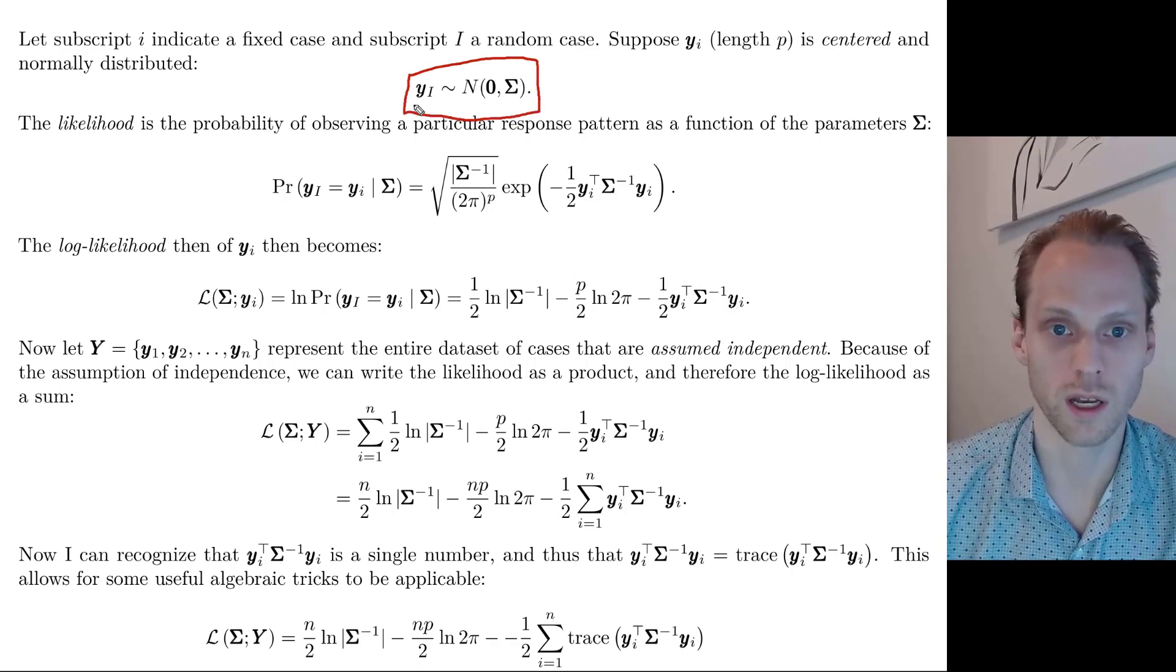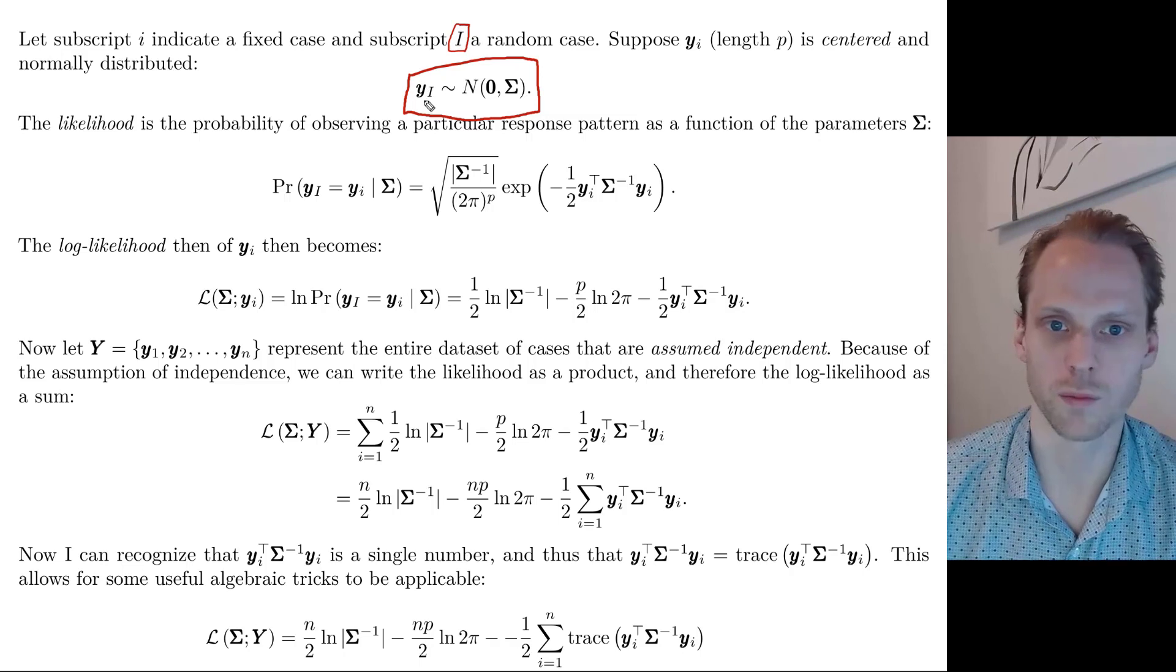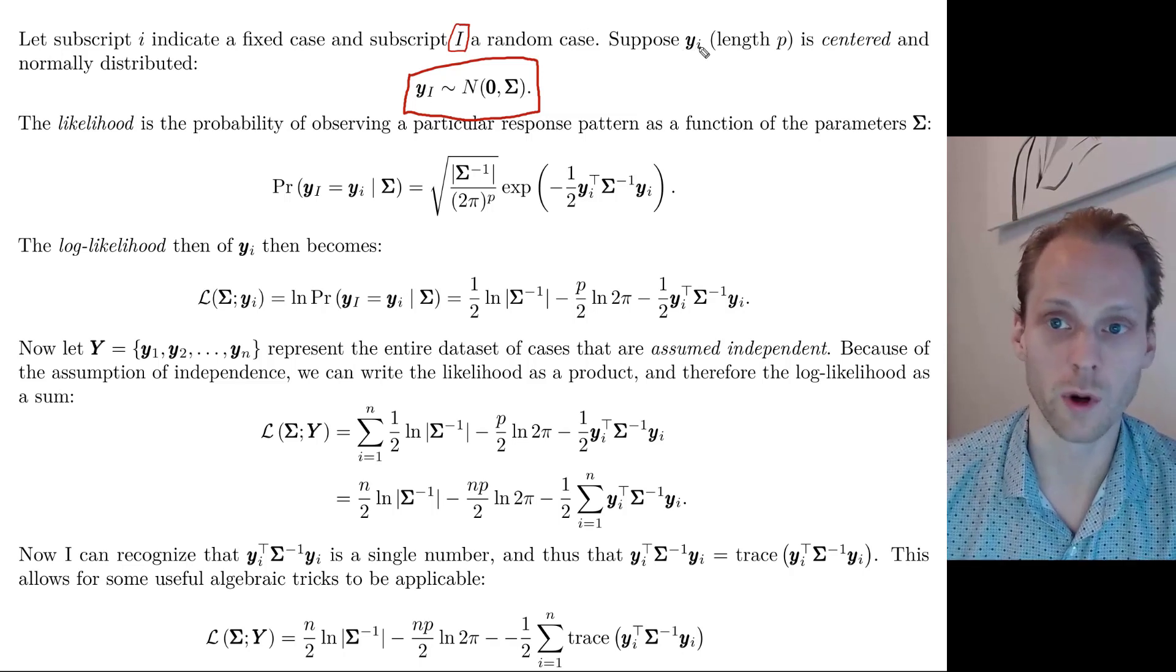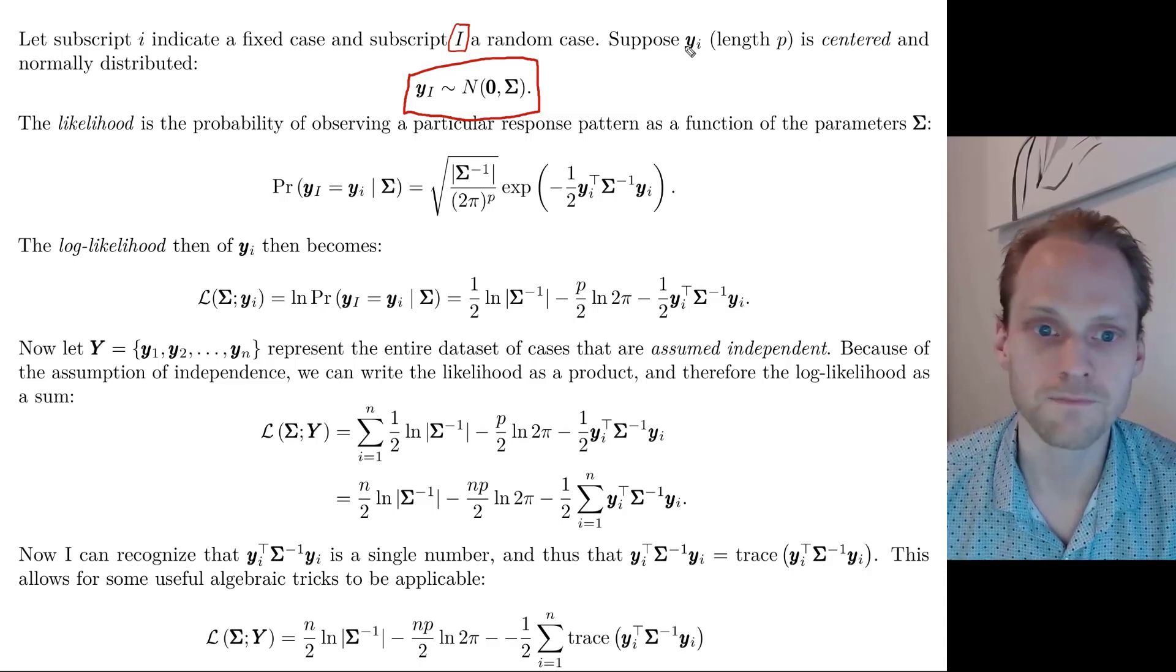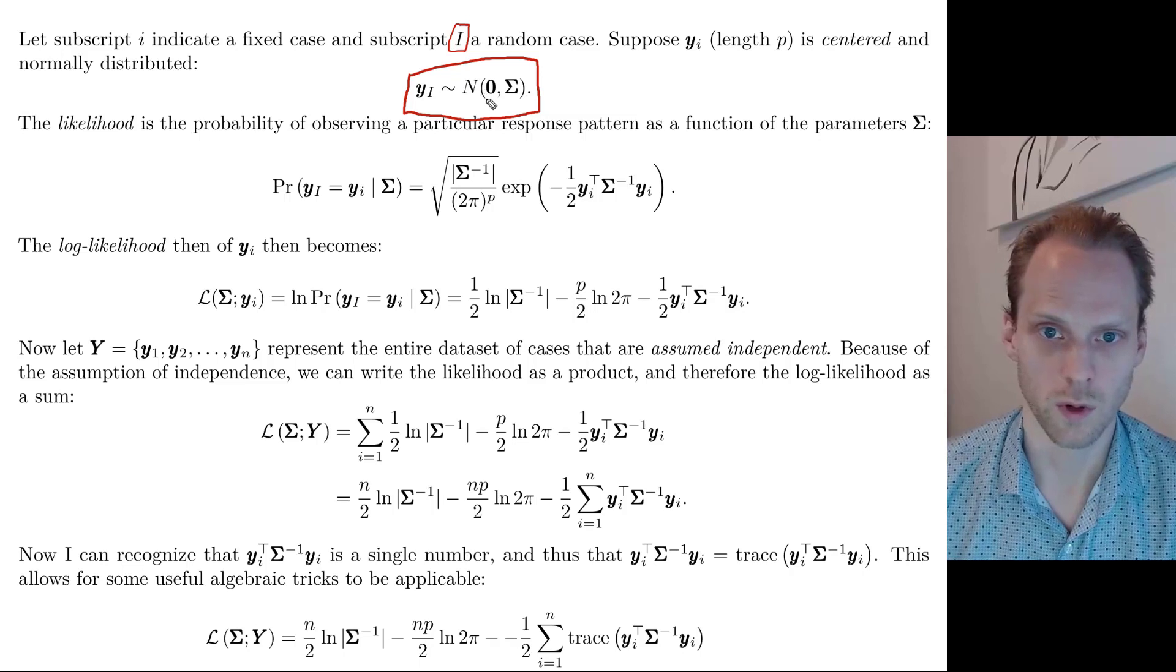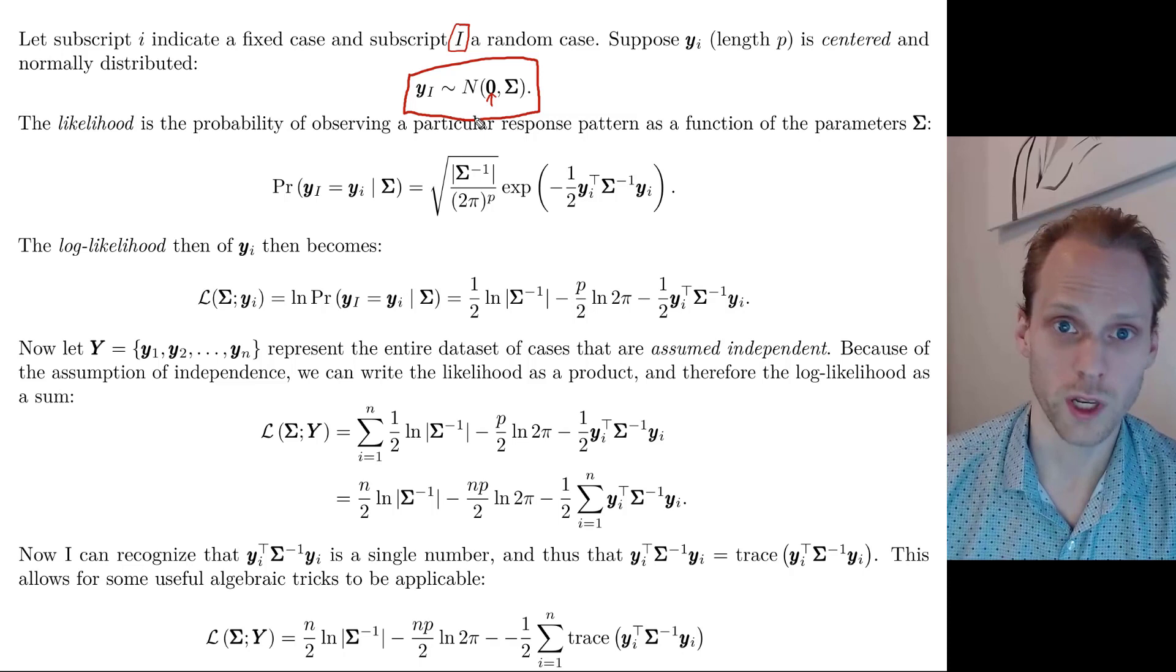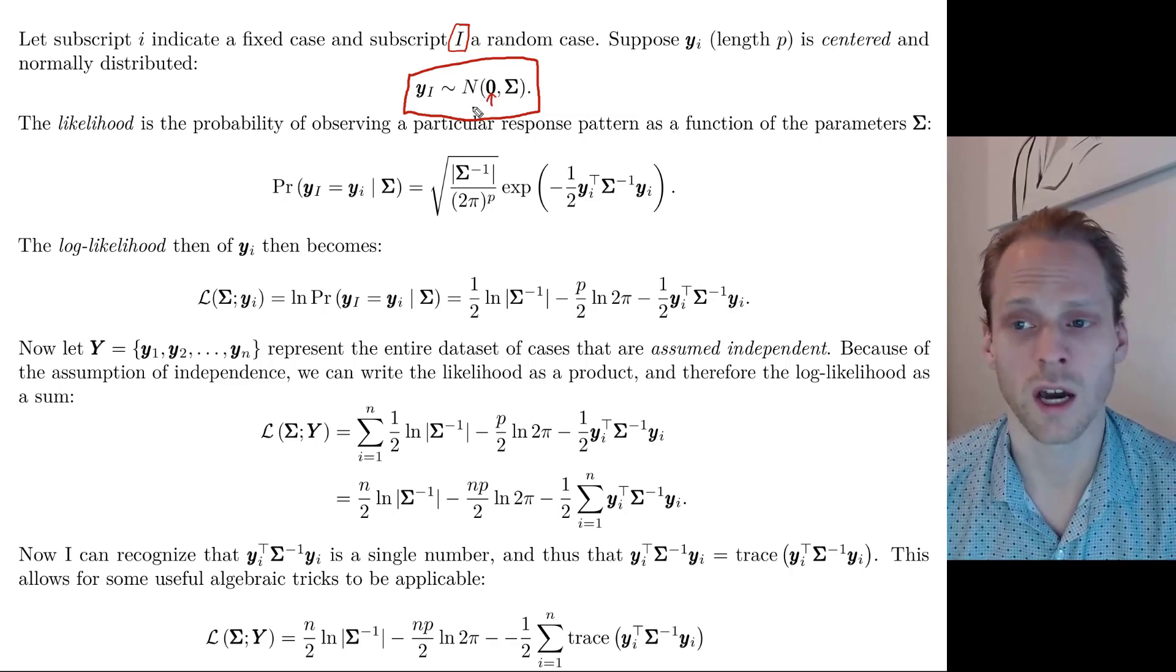And we're going to assume that a set of responses is normally distributed. So let's say here Y with subscript I capital. I always use these capital subscripts to indicate random cases. So this is the response pattern of a random subject, where Y with lowercase i is the response pattern of a fixed subject, like me or someone else. We assume that over cases of people, this thing is normally distributed with a mean of zero. So we are assuming things are centered. That's important now. In week three, we'll introduce a mean structure here. So it becomes a bit more complicated. But the same idea holds up.